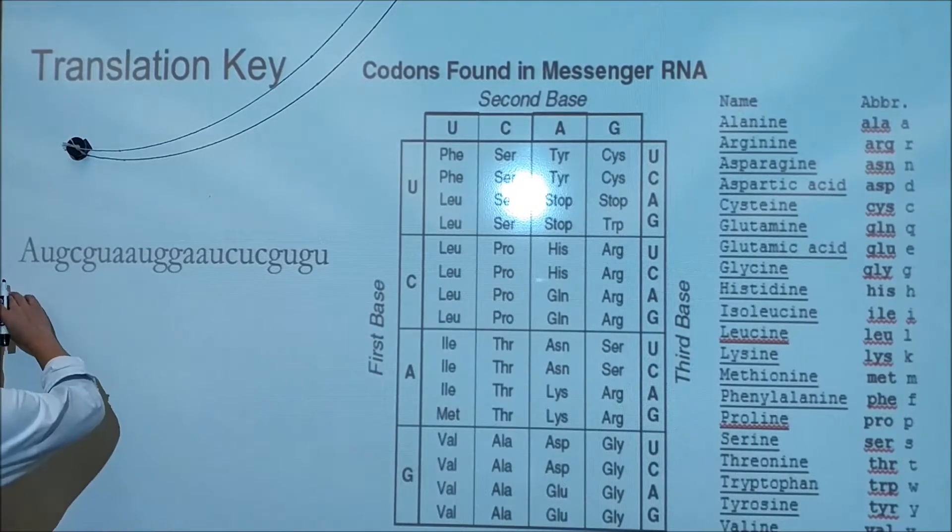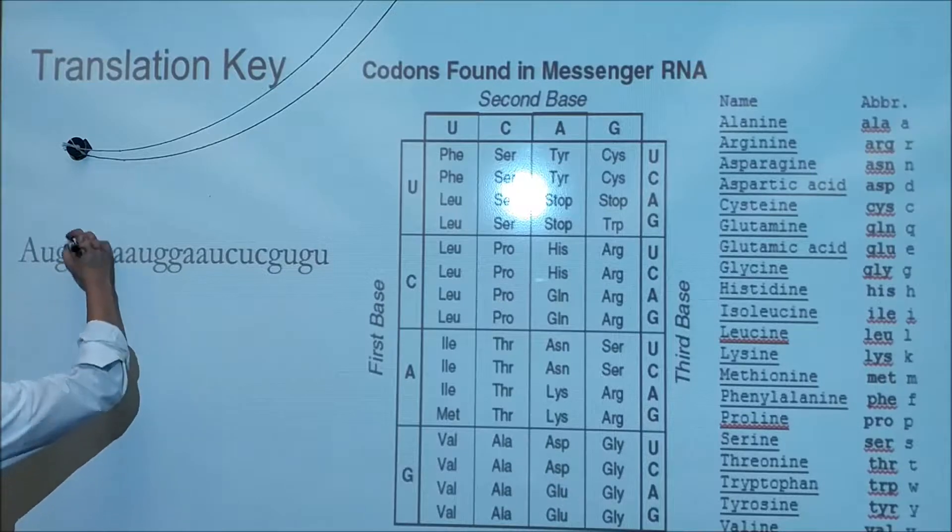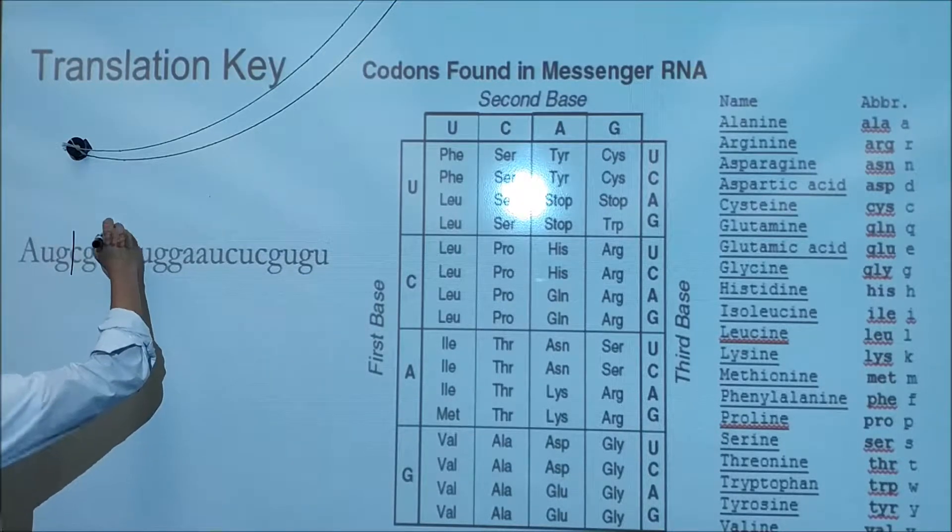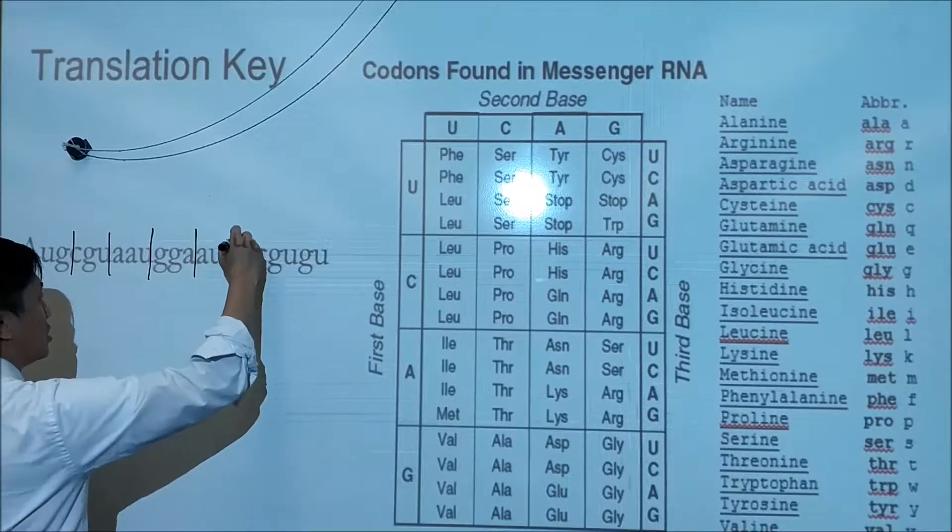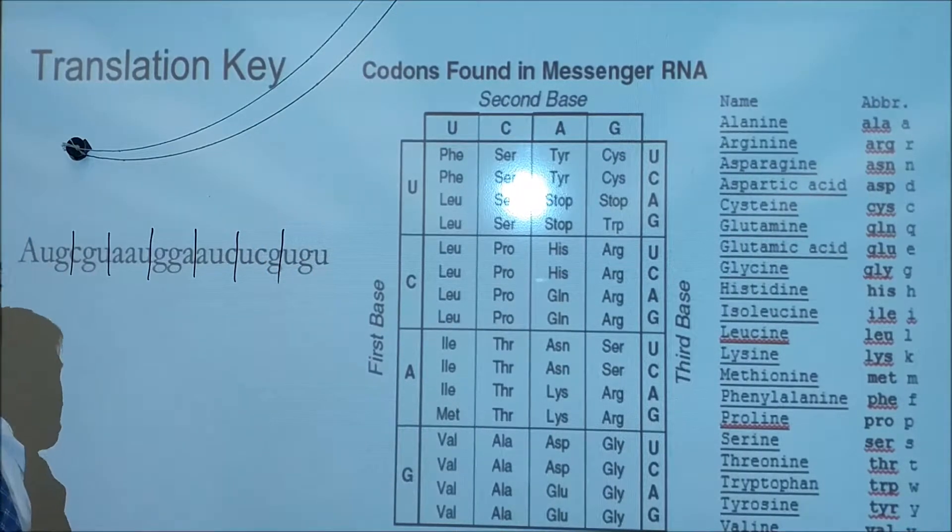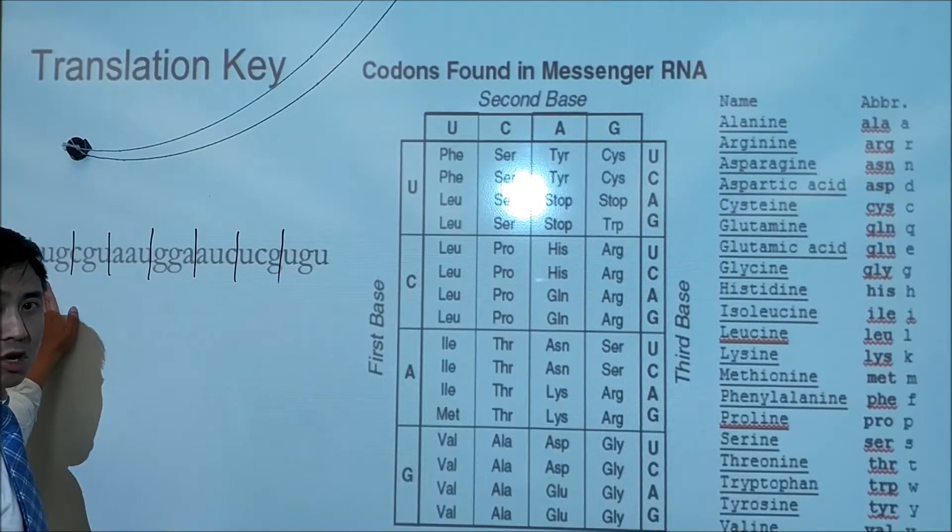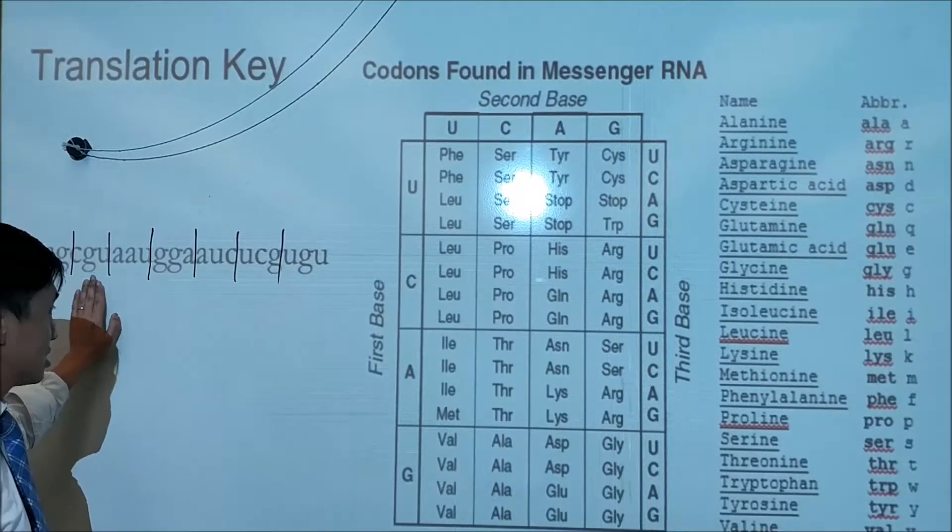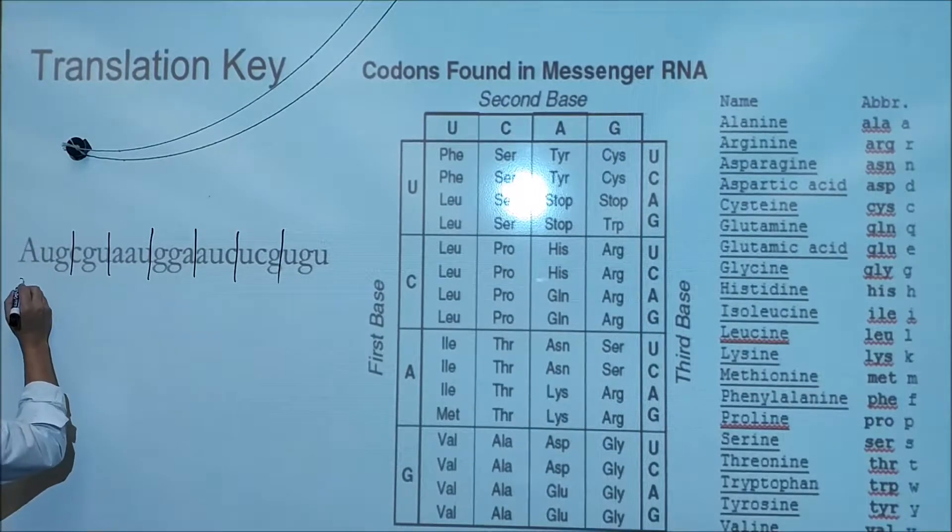To decode this gobbledygook, the first thing you should do is divide up your code into three-letter segments like so. Your RNA is coded in codons—codons are three nitrogenous bases each.